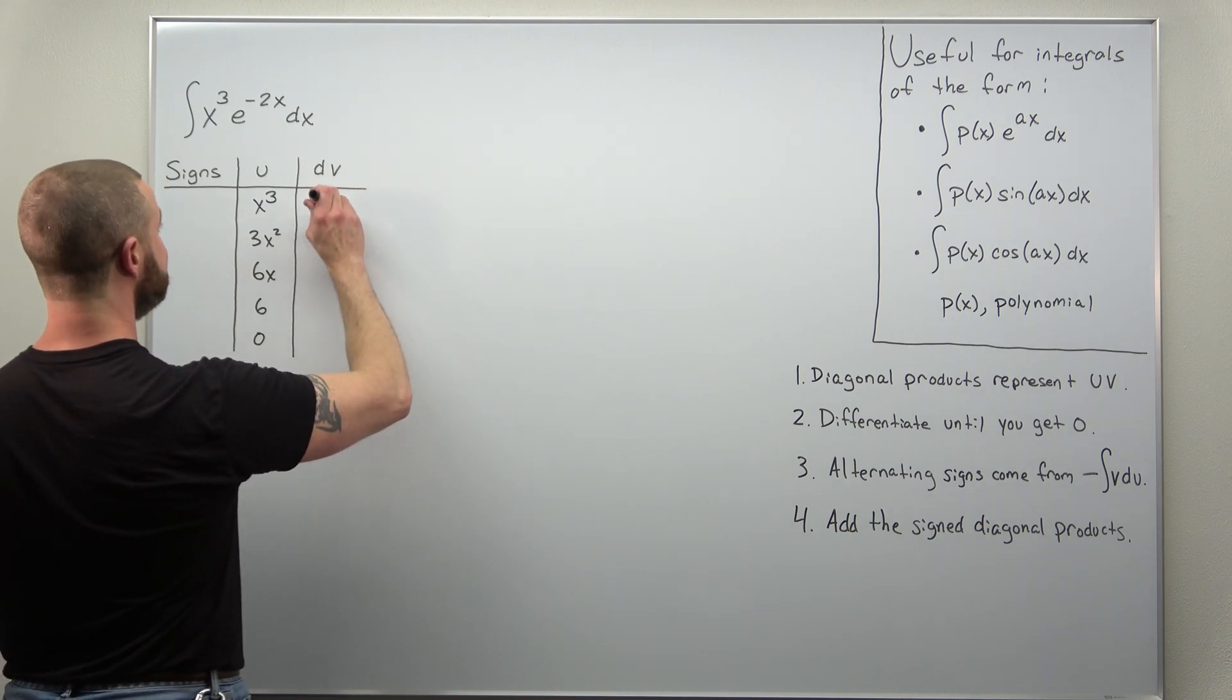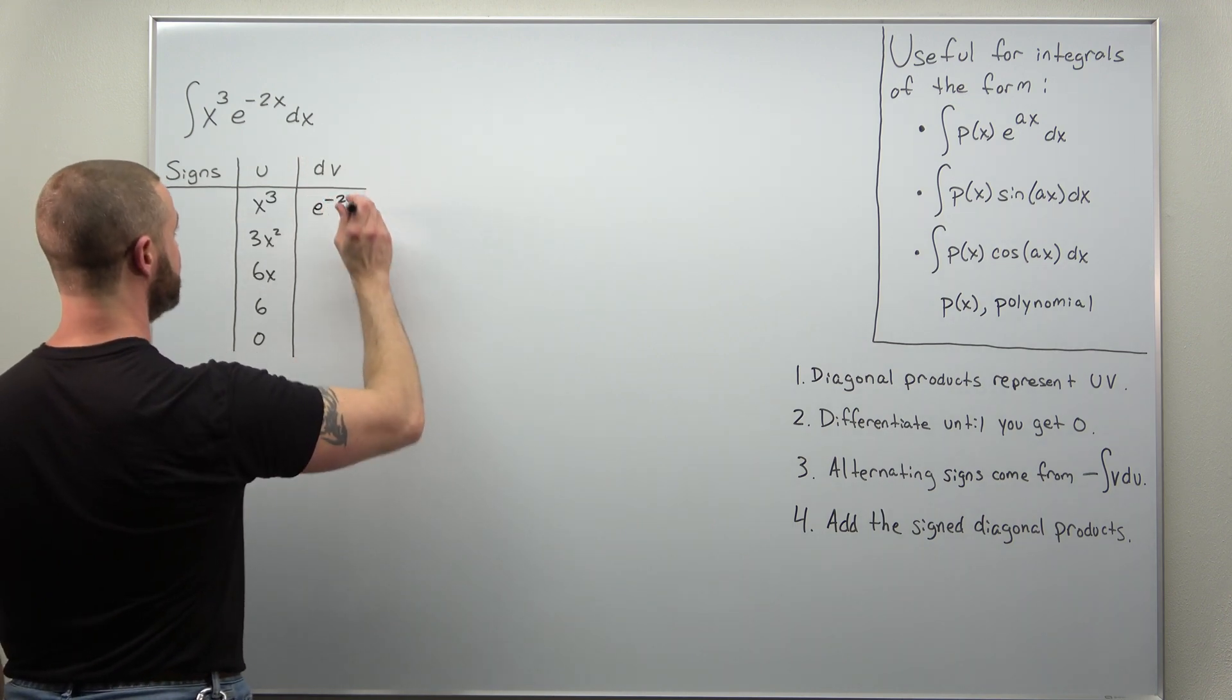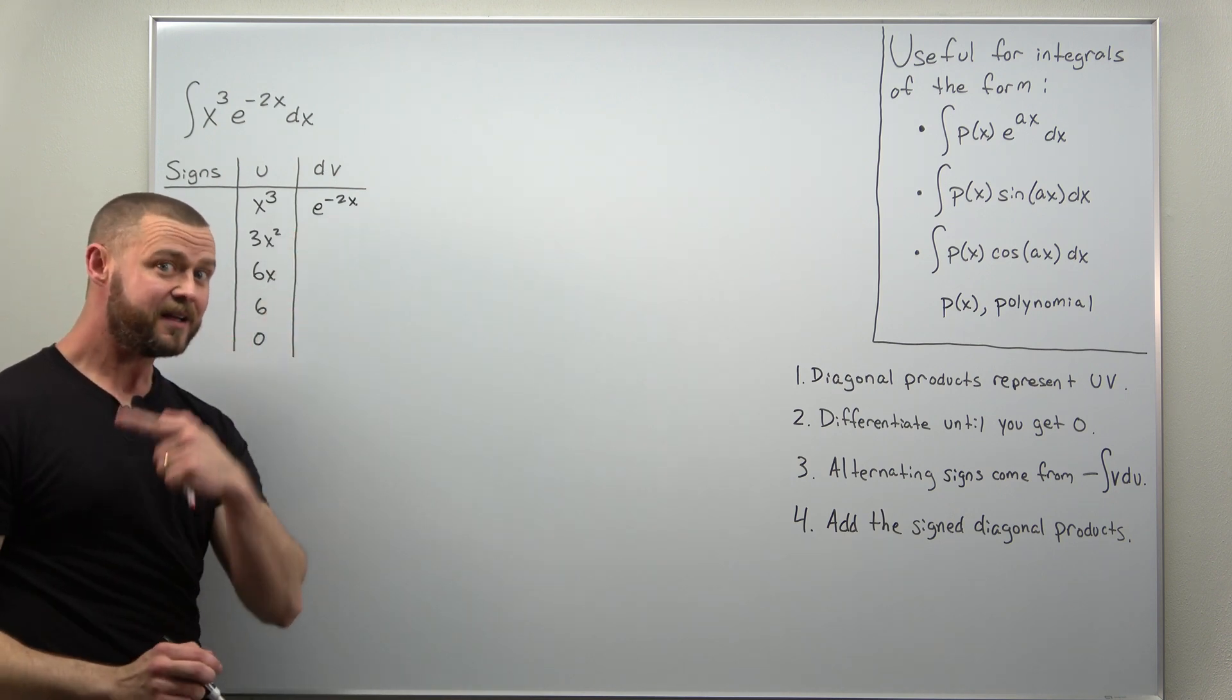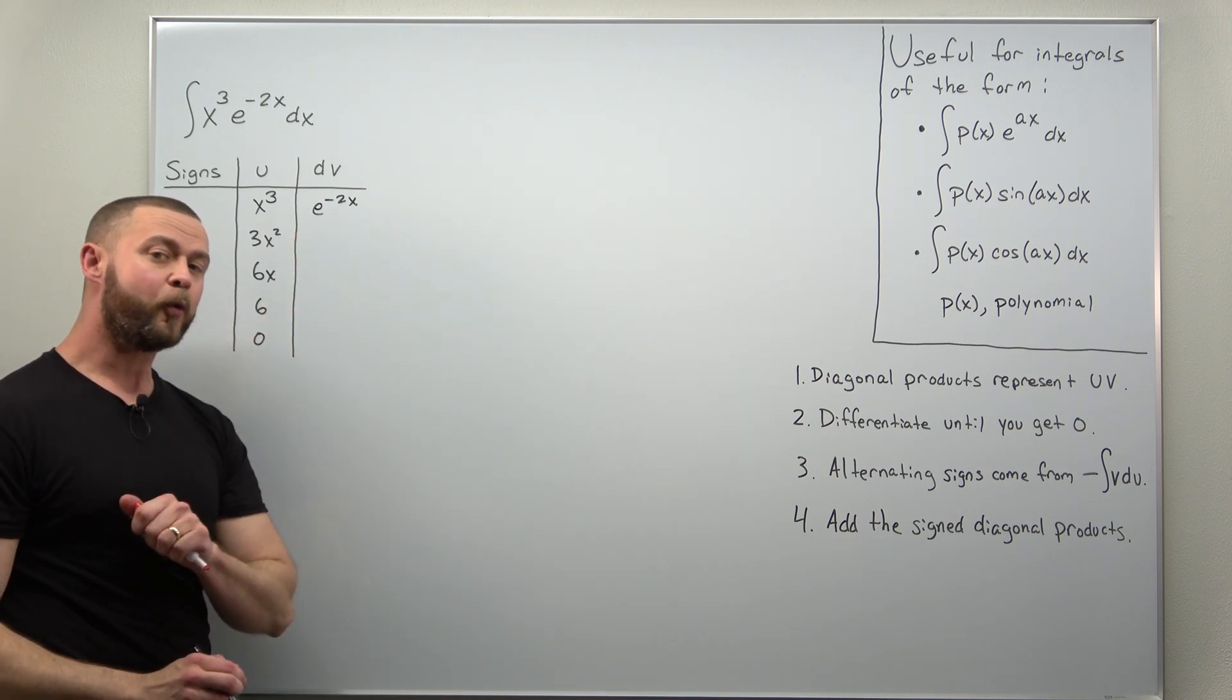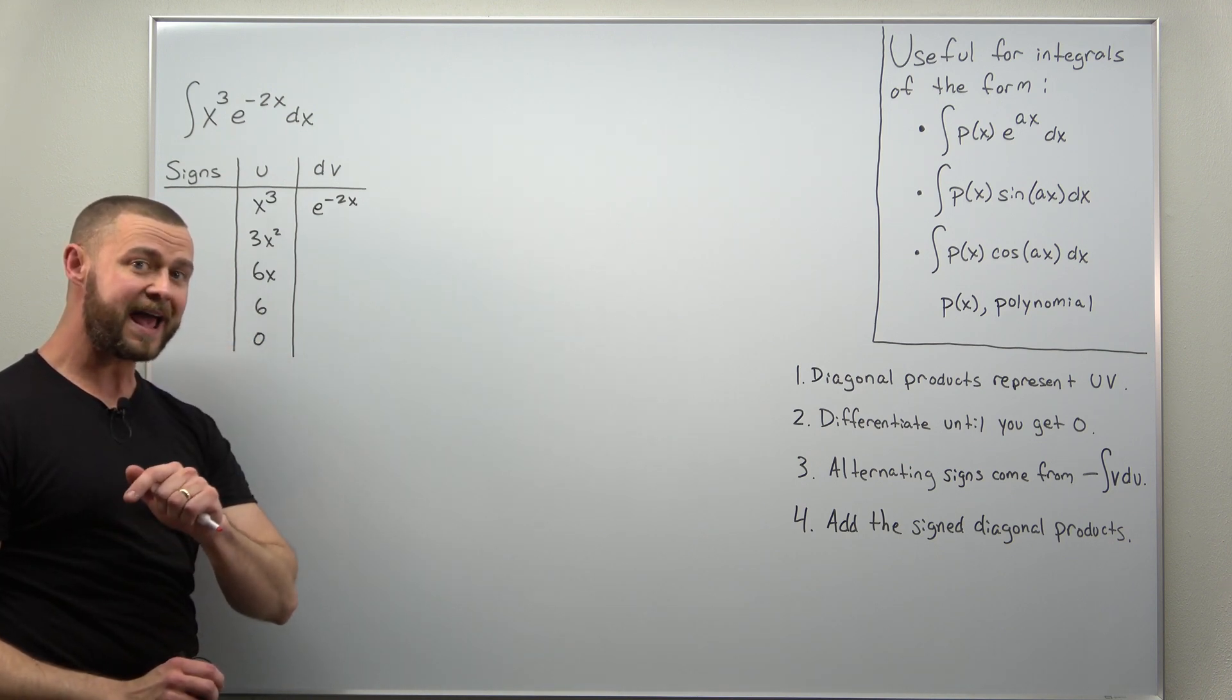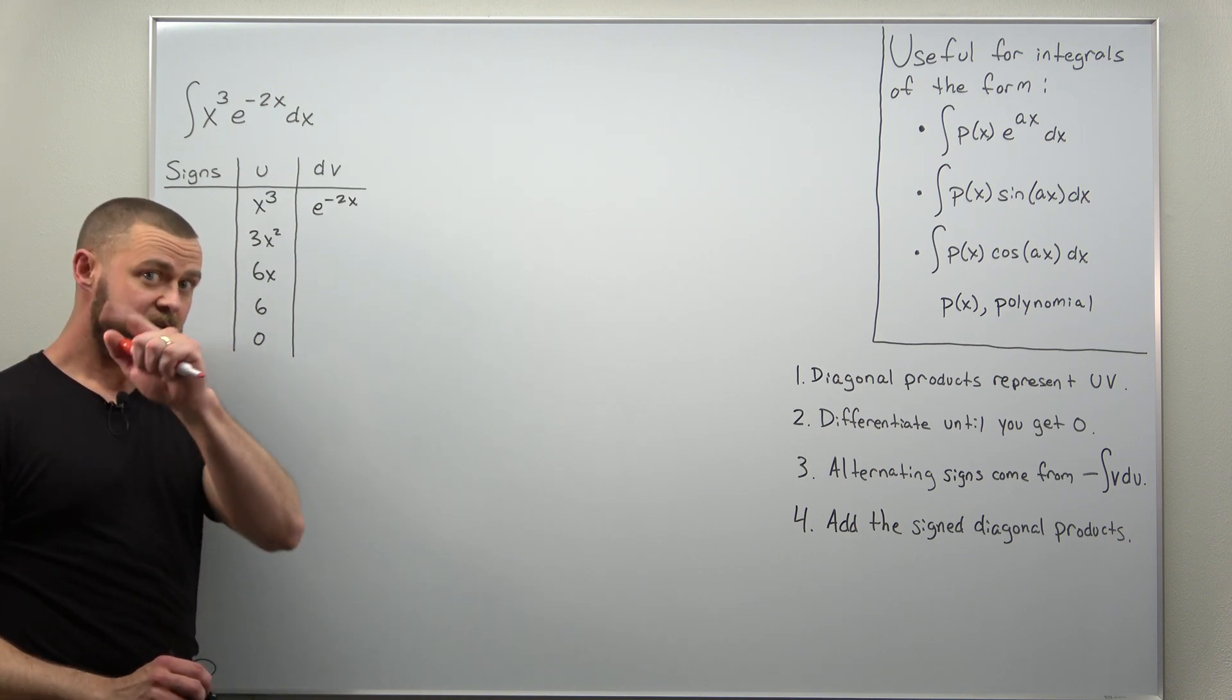Our choice for dv would be e to the negative 2x. You have a linear expression inside that exponential. The form would be ax plus b, and here the number multiplying x, a, is negative 2.